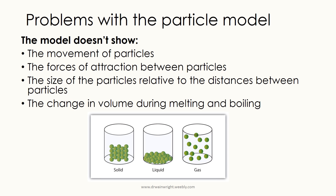The main problems with the particle model are summarised on this slide. The model doesn't show the movement of the particles — it's a 2D diagram. It doesn't show the forces of attraction between the particles, the relative distances between the particles compared to the size of the particles, or the change in volume during melting and boiling. We'll go through these problems individually on the next few slides.